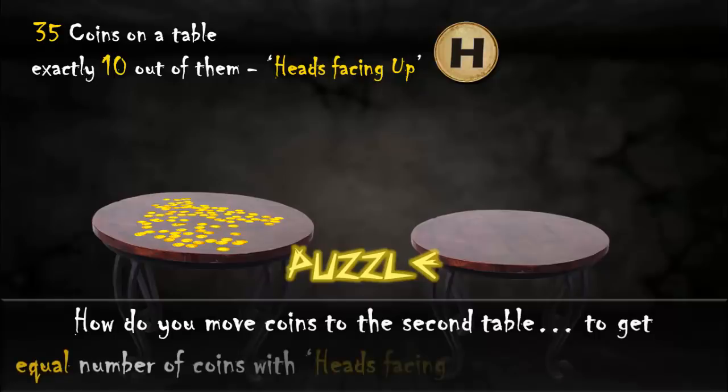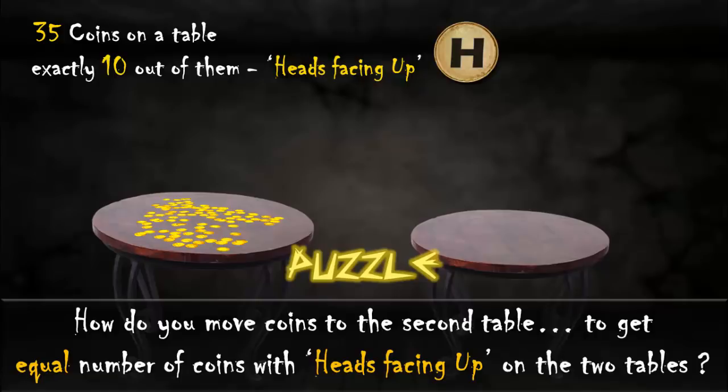How do you move coins from the first table to the second table so that there are equal number of coins with heads facing up on the two tables?